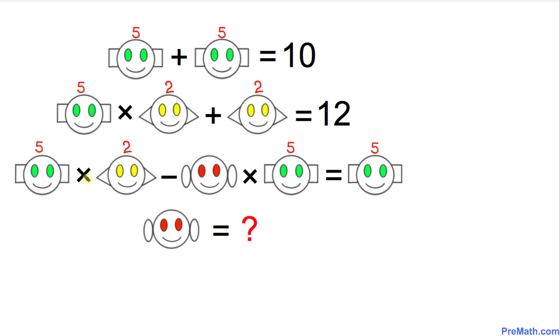Over here, we already know the value of the green and yellow happy faces. Now I'm going to call this red happy face the value z. So then this equation is going to become 5 times 2 is 10 minus 5 times z equals 5. Let's move this 10 on the right-hand side.